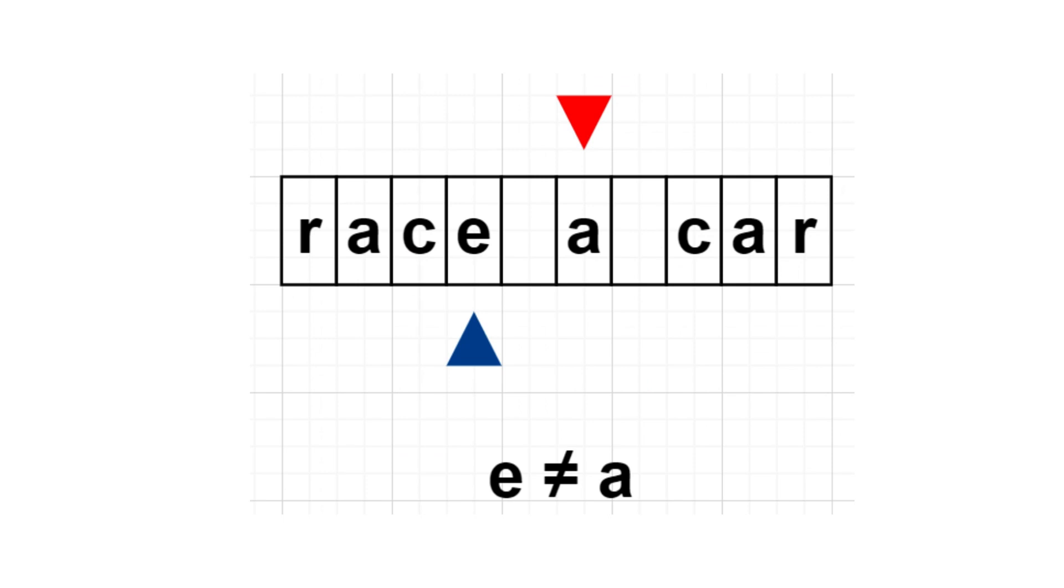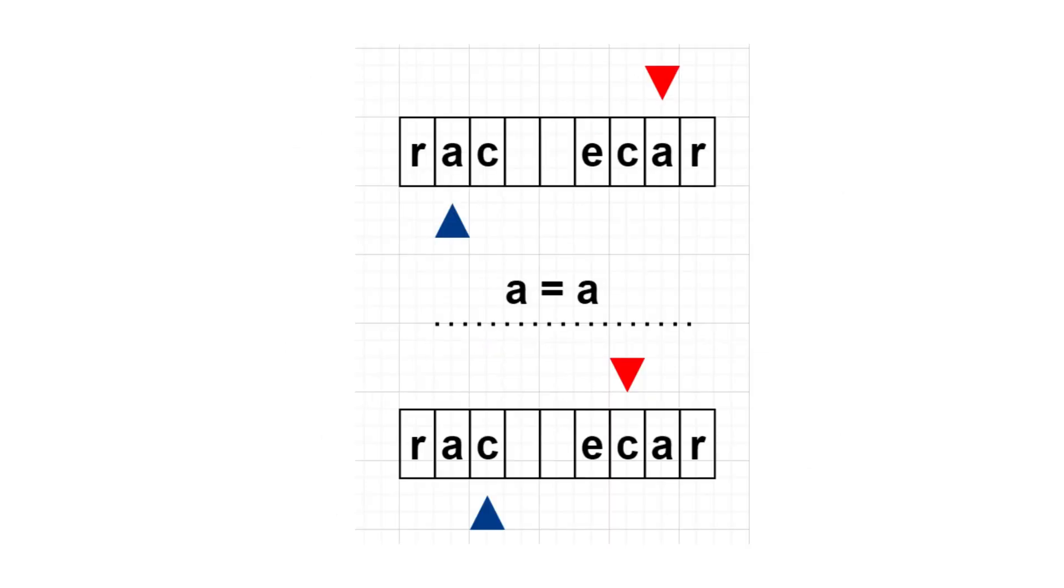If the elements they point to do not have the same lowercase letters, the string is not a palindrome. Else, we move both pointers in one position toward each other and continue the loop.